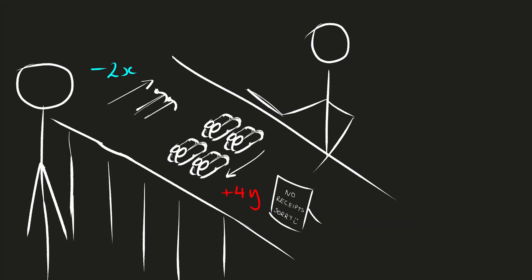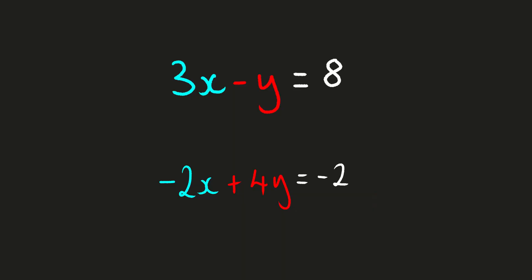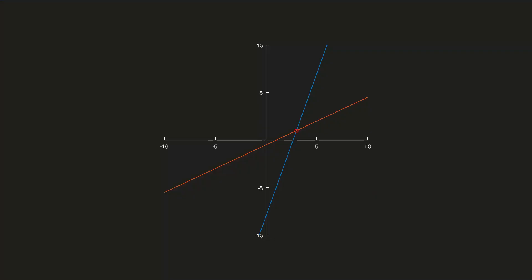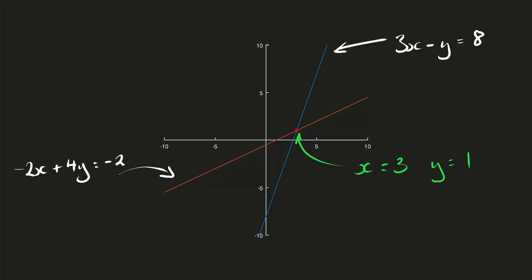Let's say you want to go back to this shop and refund two hammers and buy four pairs of shoes. That transaction has a net cost of minus two pounds — so the shop is giving you two quid back. That gives us the equation minus 2X plus 4Y is equal to minus 2. Let's put that on the graph. Immediately you can see that these two lines are crossing. They're both representing the equations we've just talked about, and they cross at one point.